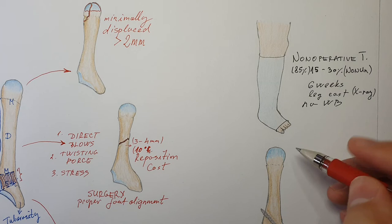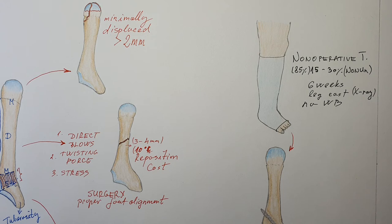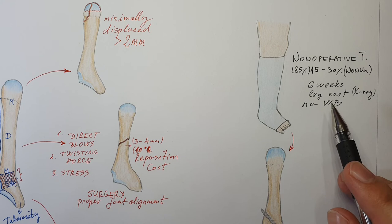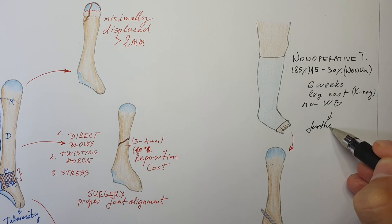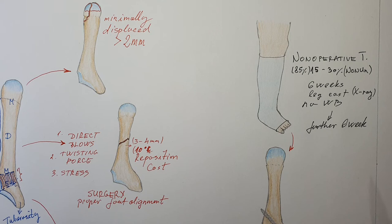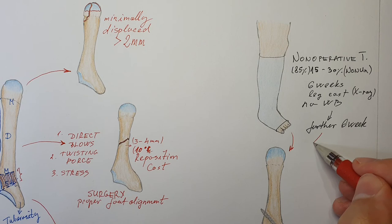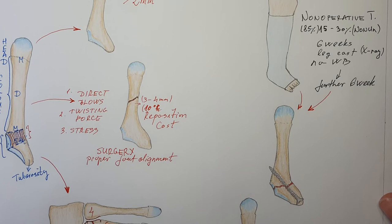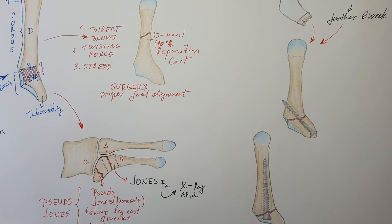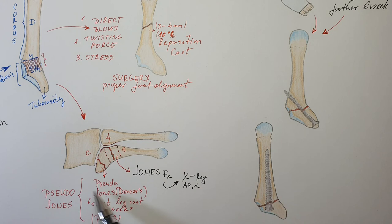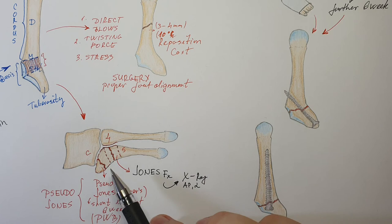After six weeks, if a control X-ray shows no union, a further six weeks of therapy can be applied. If after this there is still no union, an operation will be needed. In patients with a non-union Jones fracture, when they step on their foot they will feel pain. When you wake up every morning, step on your foot, and feel pain while walking the whole day, this will ruin your quality of life. This fracture won't kill a patient, but it will ruin their quality of life.